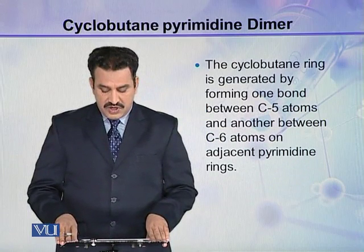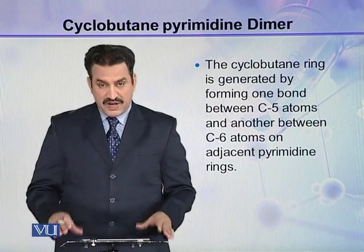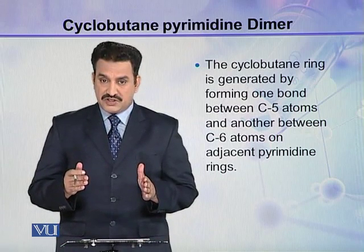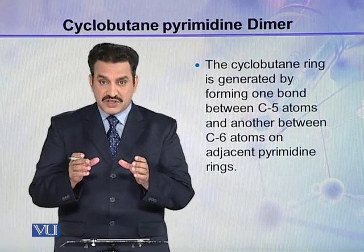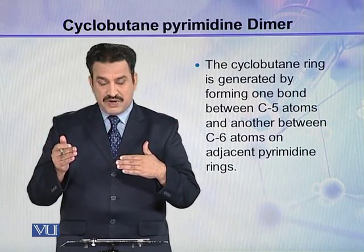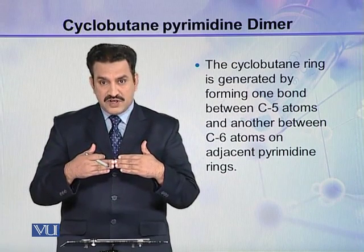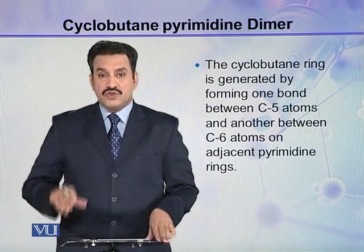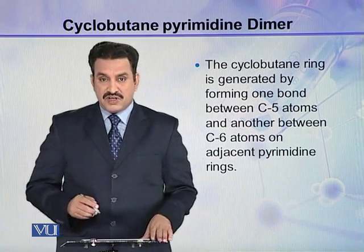The cyclobutane ring is generated by forming one bond between the C5 carbon atoms of one pyrimidine ring and the C5 atom of the adjacent pyrimidine ring. The second bond is formed between the C6 atoms of both adjacent pyrimidine rings. In this way, two covalent bonds are formed between the two adjacent pyrimidine rings, creating the dimer.